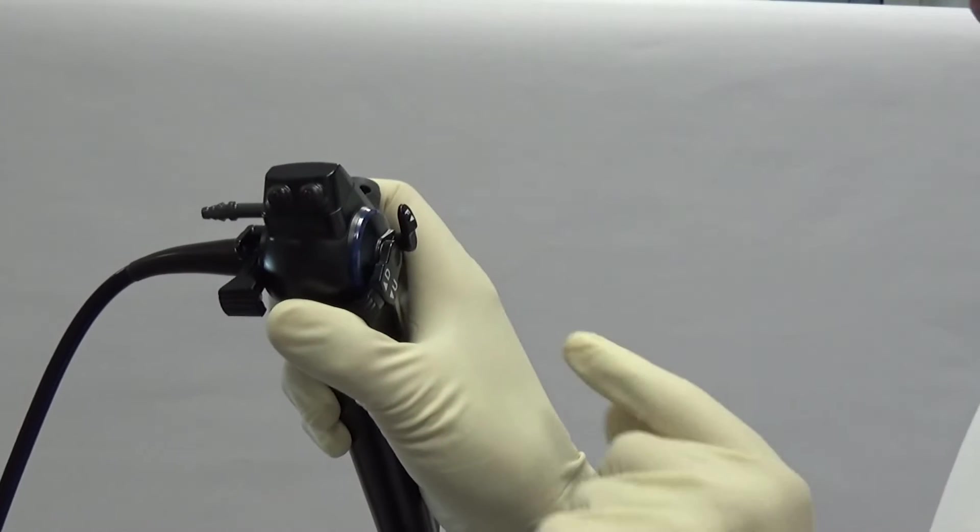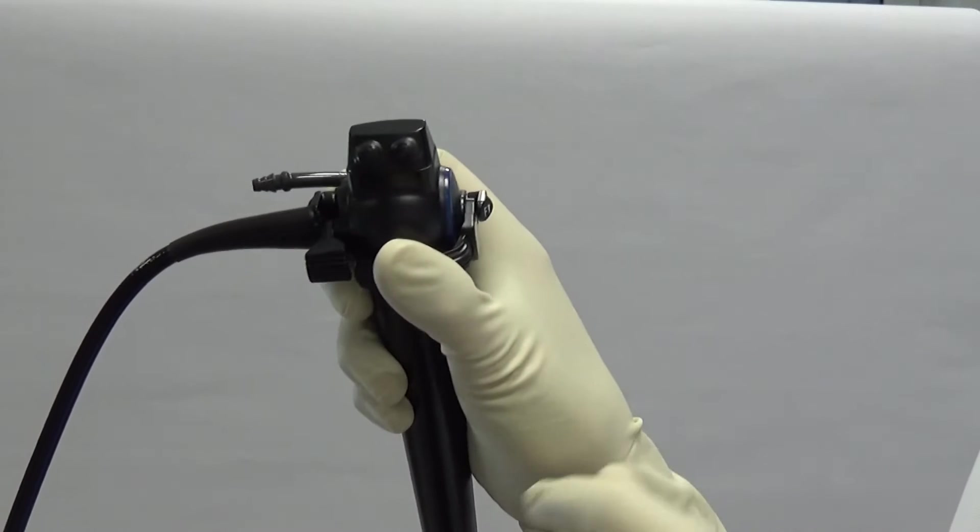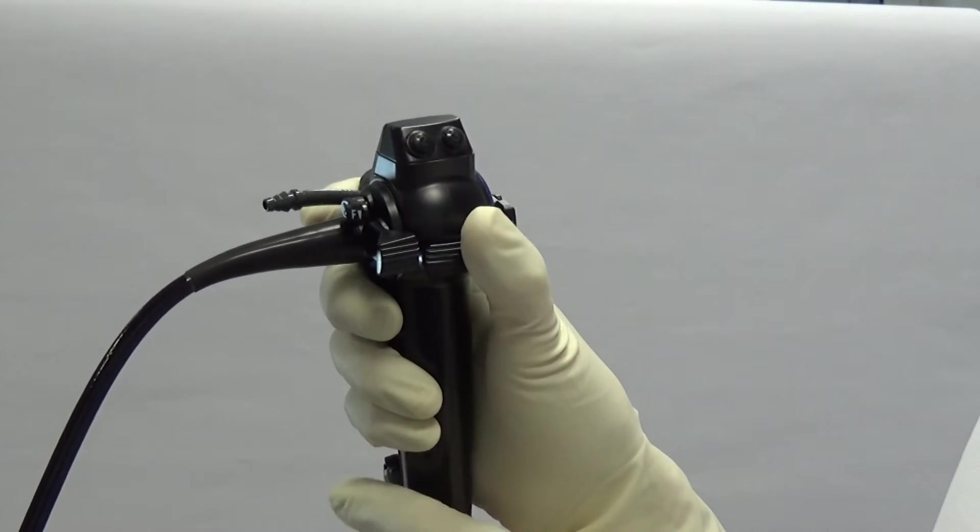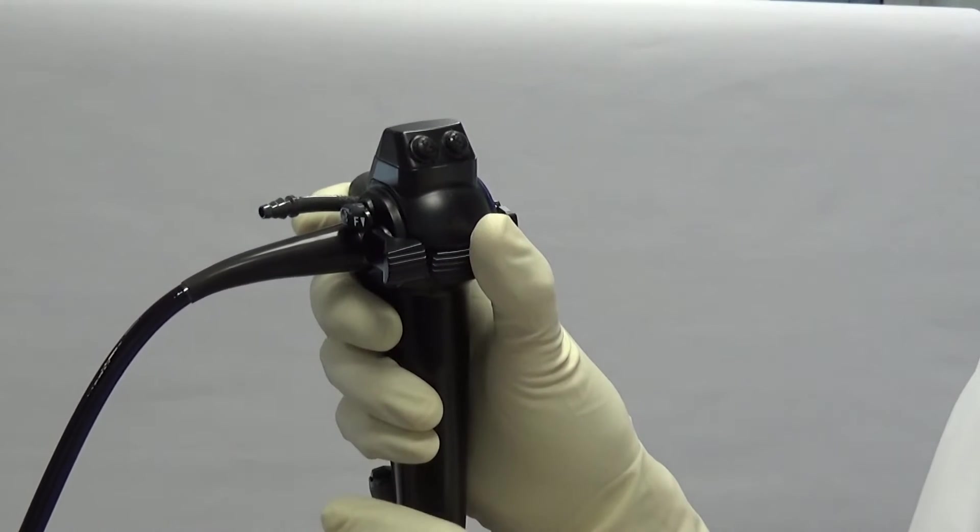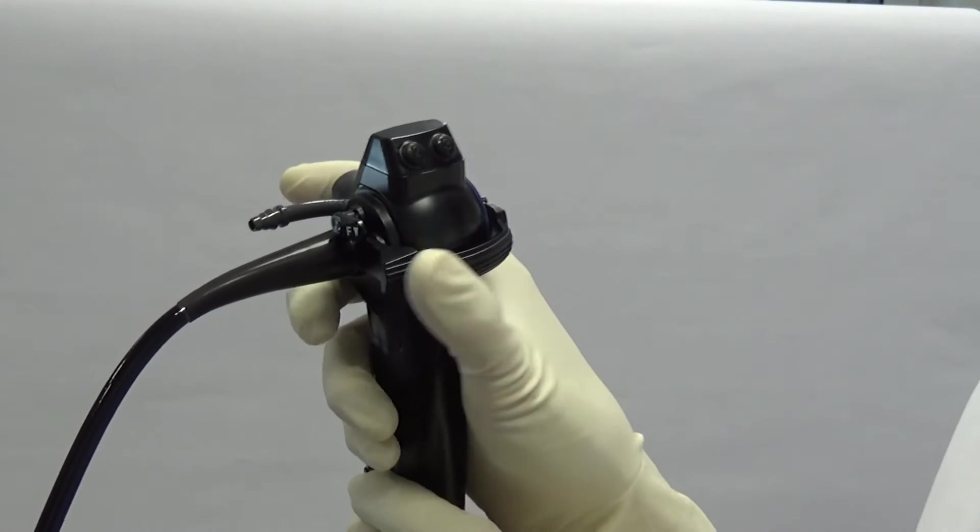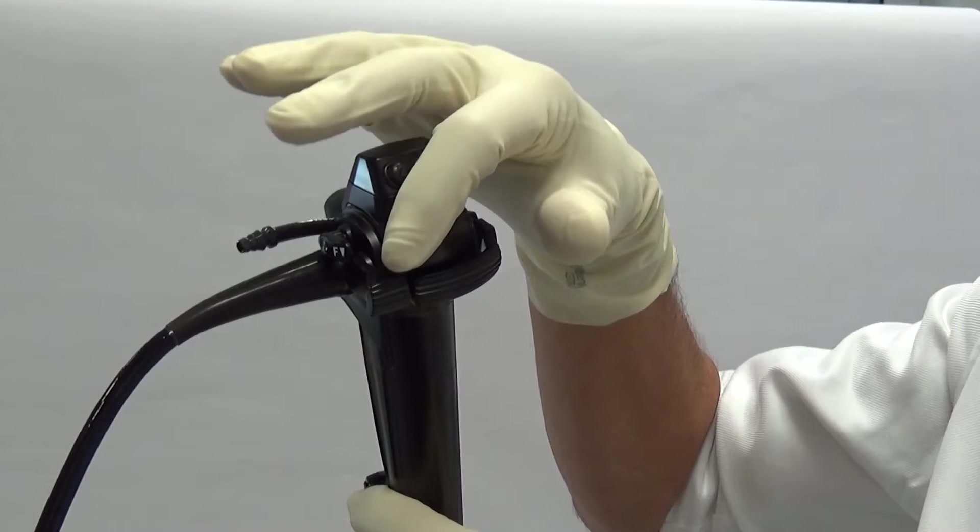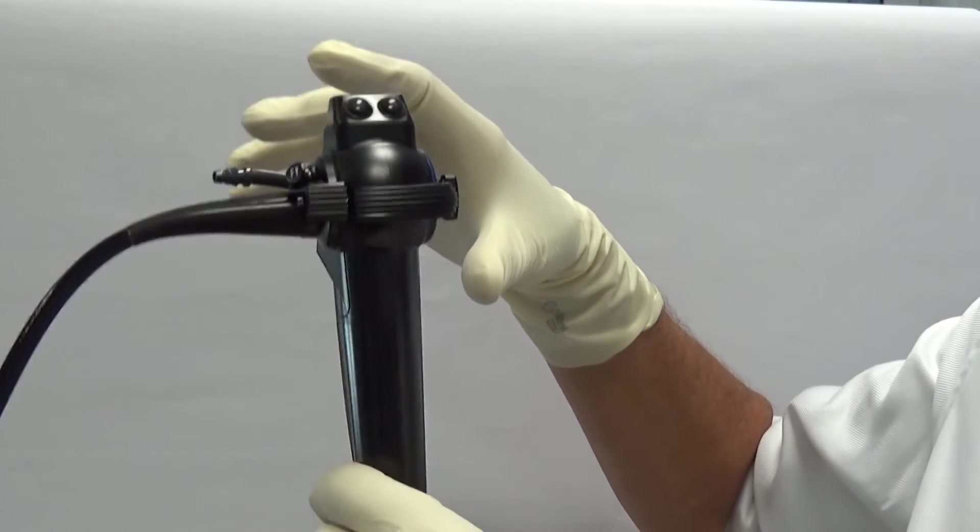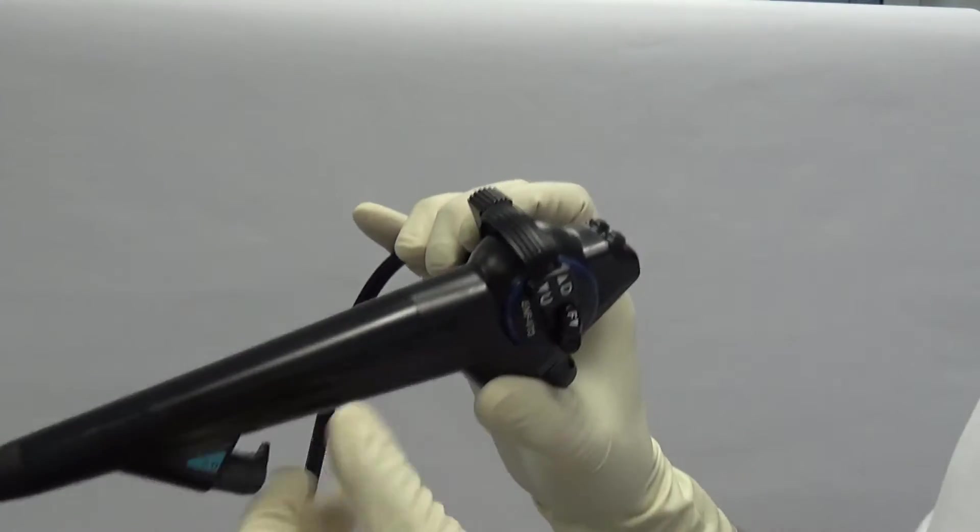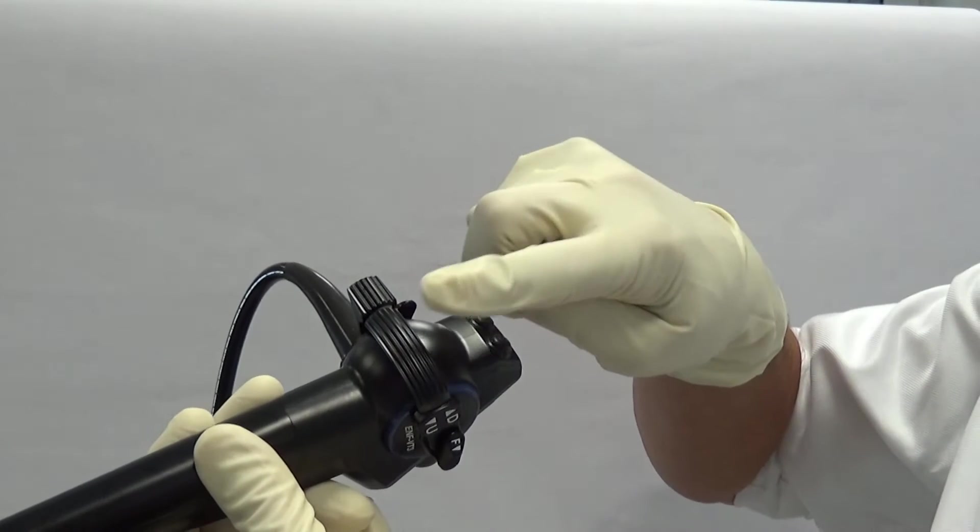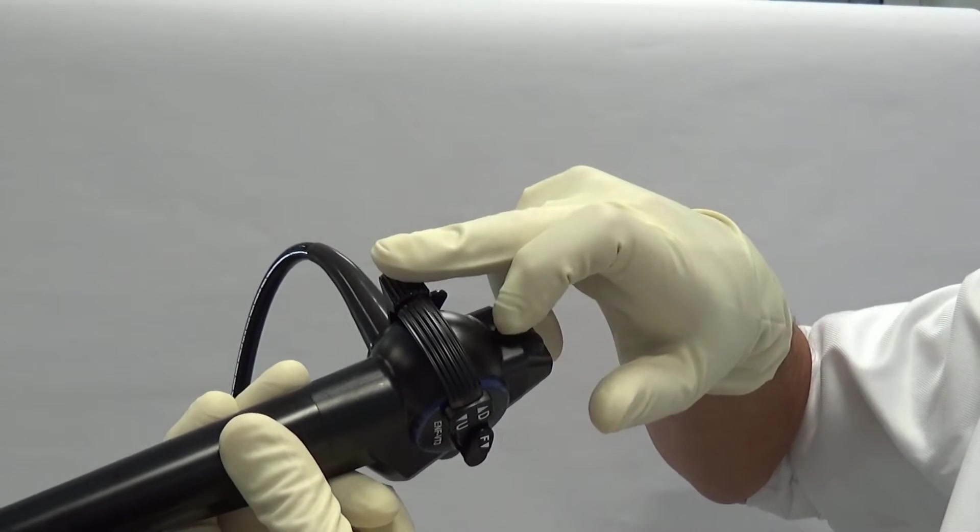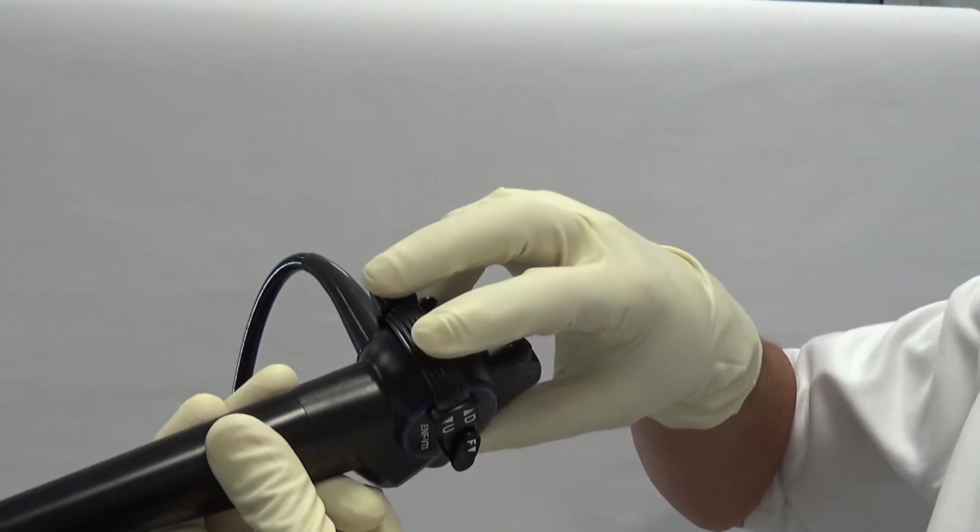However, if you want to do endoscopy in the larynx where the target is moving, I think you need two fingers to control these two levers. That's why I prefer the index finger and the middle finger to control these two levers.